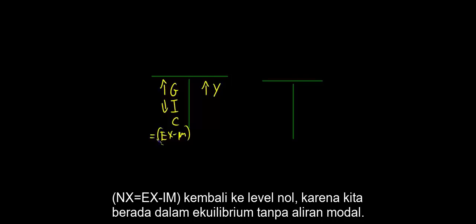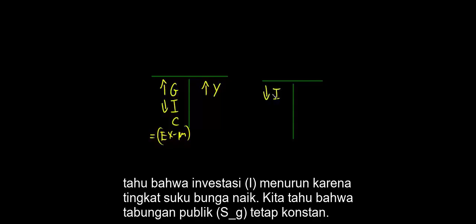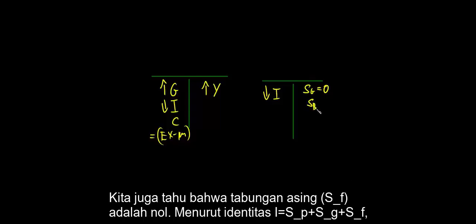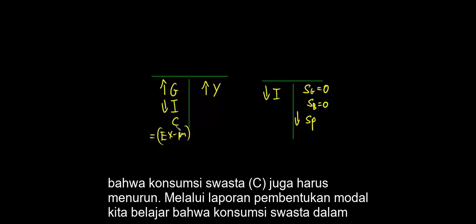What we do know is that exports are less than imports — both increased, but we are still equal to zero because we are in equilibrium. Examining the capital account: investment is small because interest rates increased. Government savings SG remains constant. Private savings Sb has not changed because we did not have data on Sb. What must reduce savings is Sb, meaning disposable income. So disposable income must decrease. If disposable income is small, that means C must also decrease.